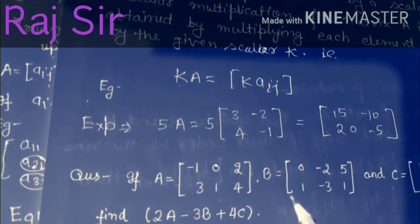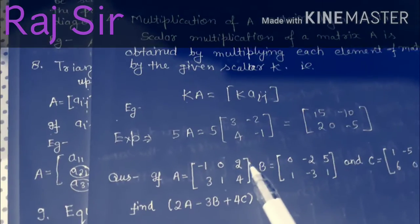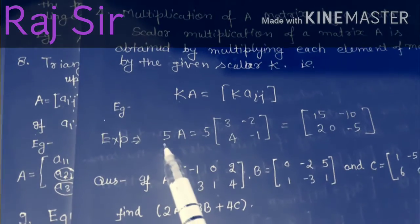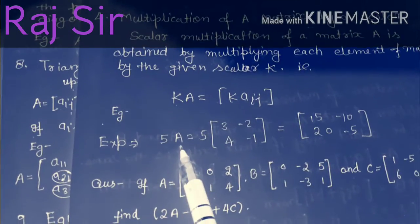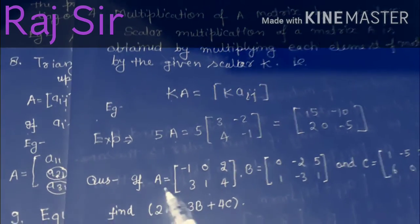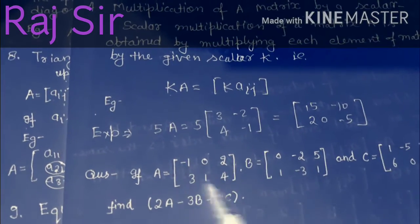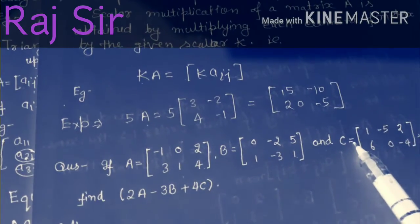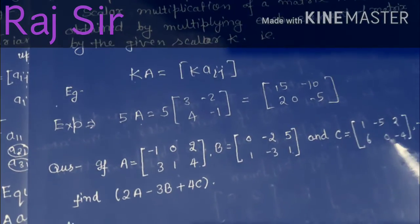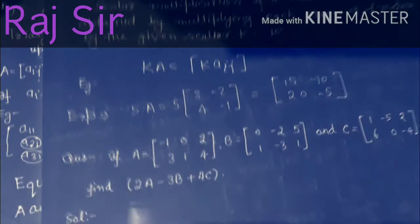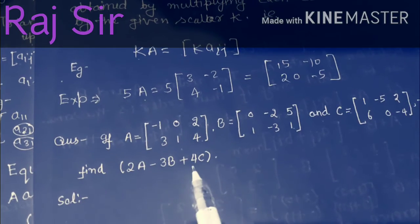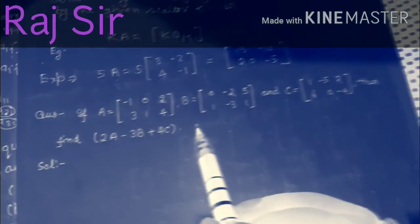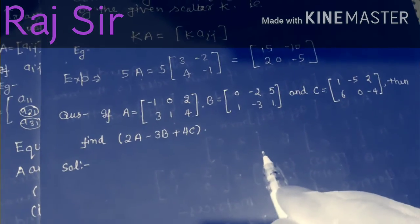Next, students, we will solve an example. Given A equals [minus 1, 0, 2; 3, 1, 4], and B equals [0, minus 2, 5; 1, minus 3, 1], and C equals [1, 6, minus 5; 0, 2, minus 4]. Then find 2A minus 3B plus 4C. Students, solve this example yourself. Okay, thank you.